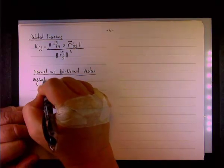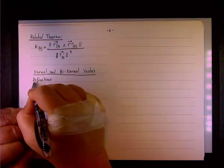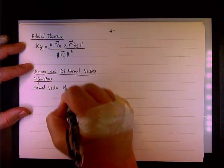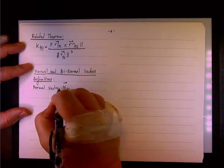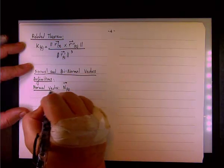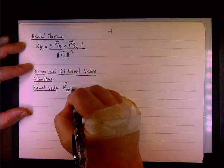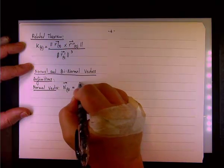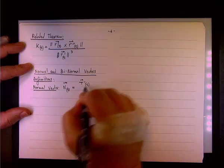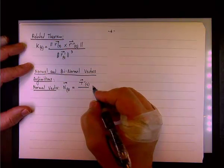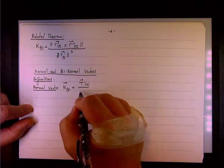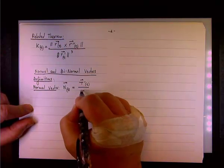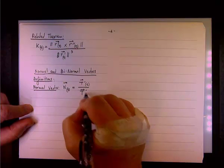So I have a couple of definitions here. The notation, of course, is n, and I'm going to say that n is a vector, and we can express it as a vector function, n of t. By definition, it will be T prime, the vector T prime, the derivative, divided by, can you take a guess what we're going to divide by?